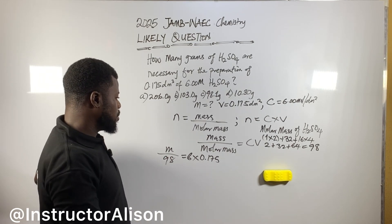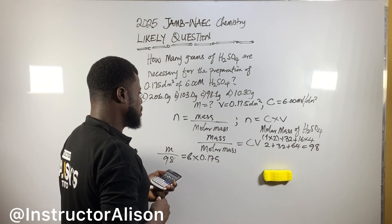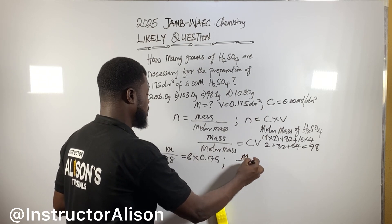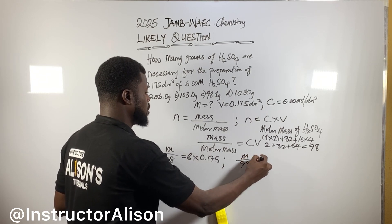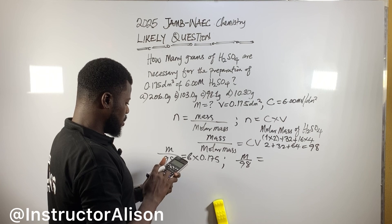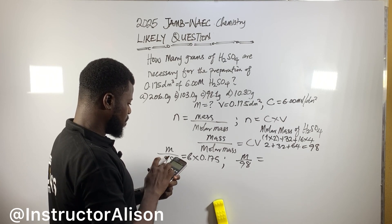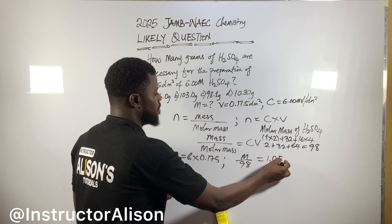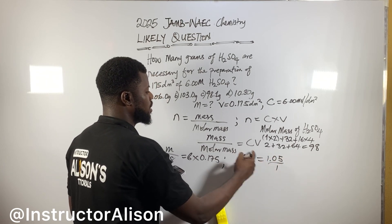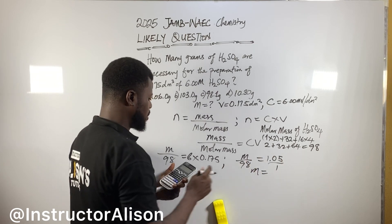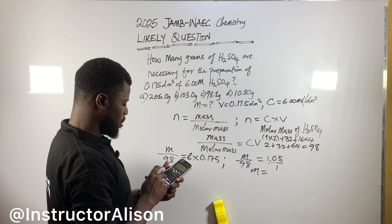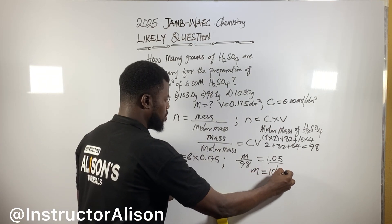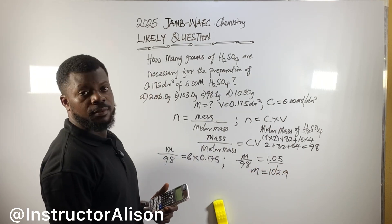So as it be like this now, mass over 98 equal to 6 times 0.175. The answer will give me here 1.05. Cross multiply. 1 times M will be M, equal to 98 times that number there, which is 102.9 grams.